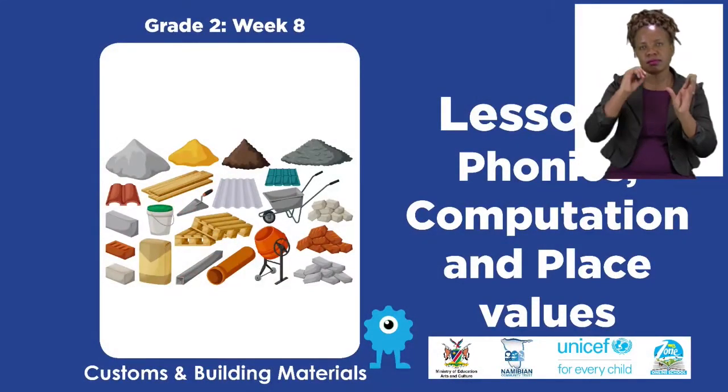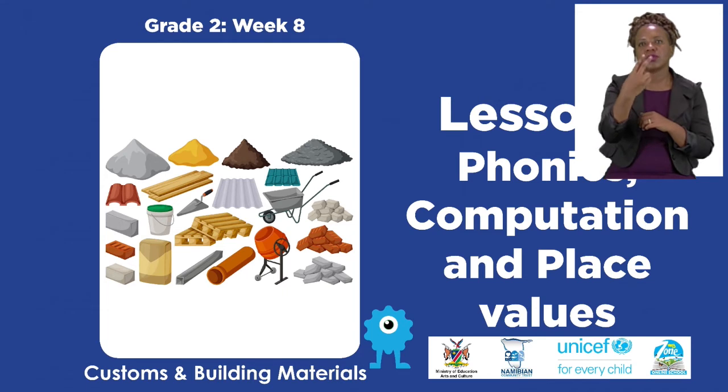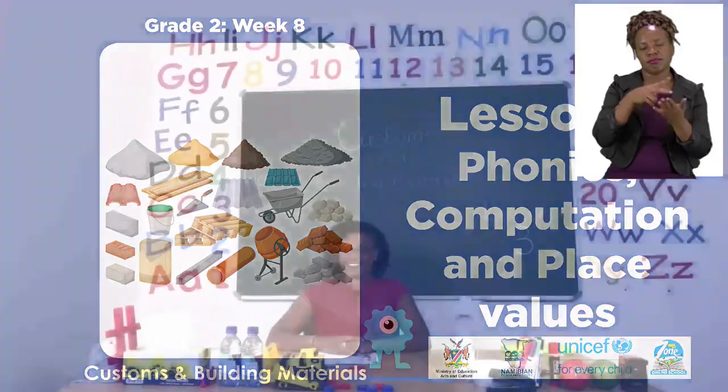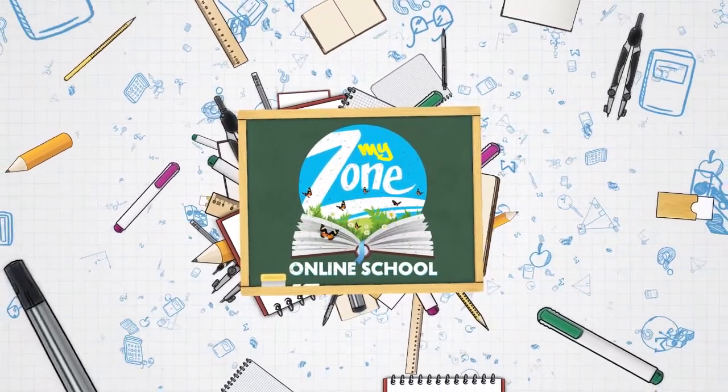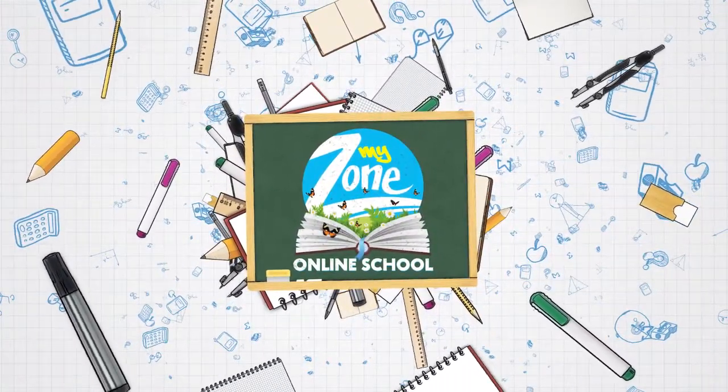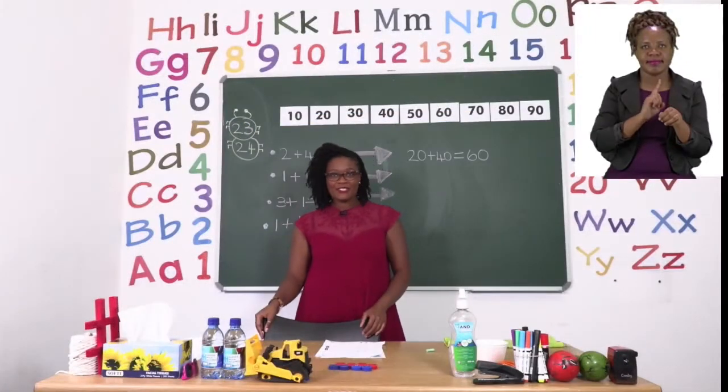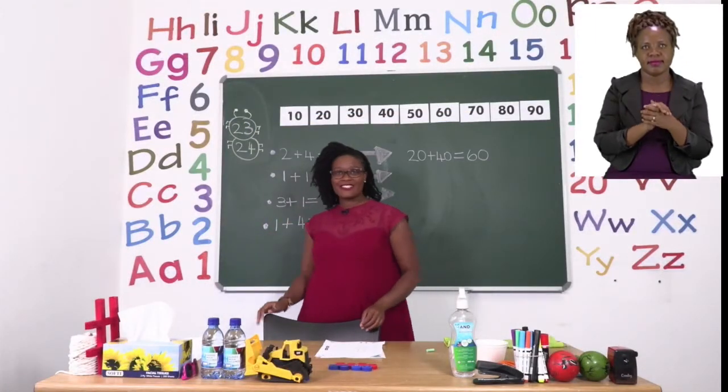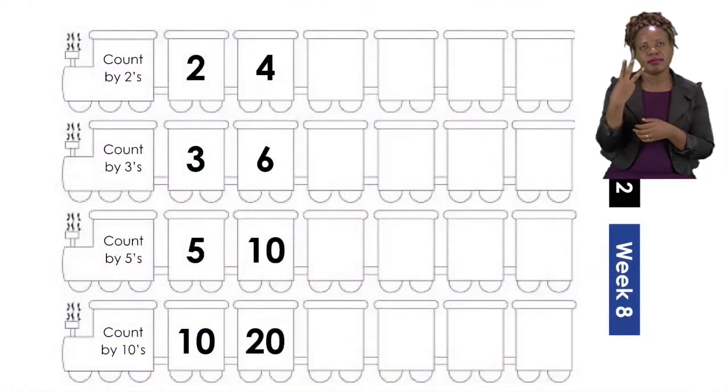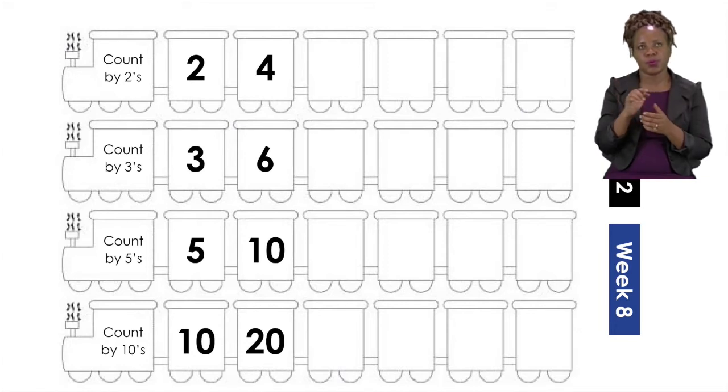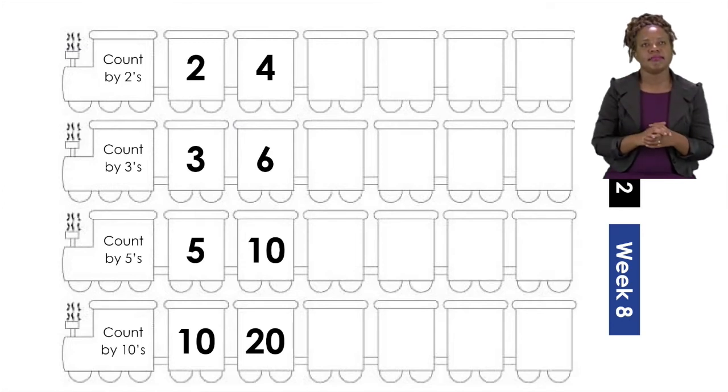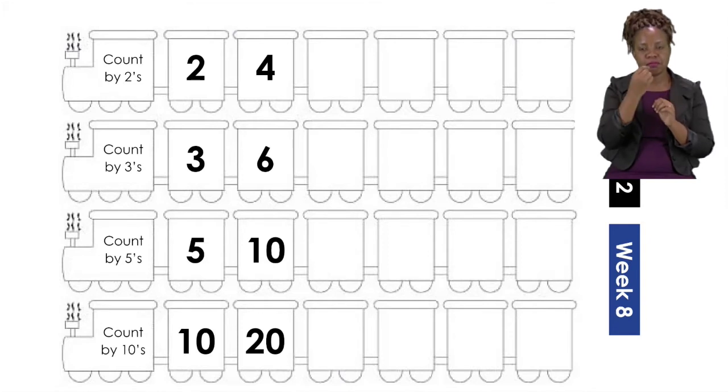Today's lesson is all about phonics, computation and place values. For our first exercise boys and girls, let's turn to page 23. On page 23, we are going to be completing the patterns. Now as you can see, our choo choo trains are missing some numbers and it is our job to count by the number so that we can complete our choo choo trains.